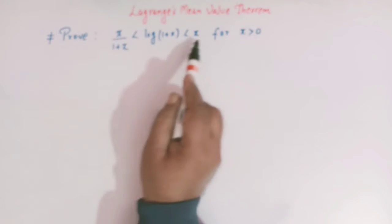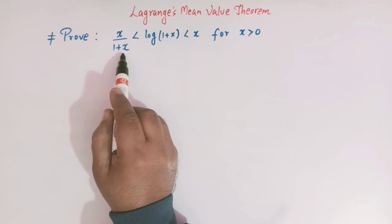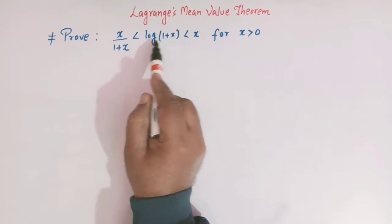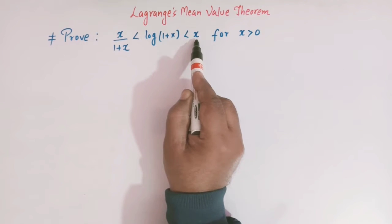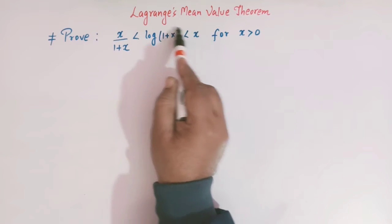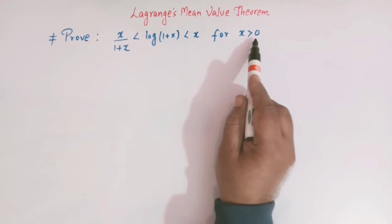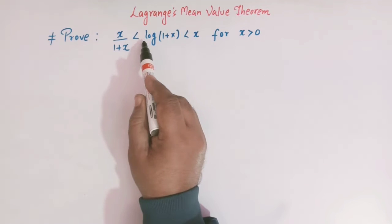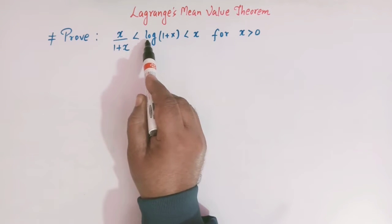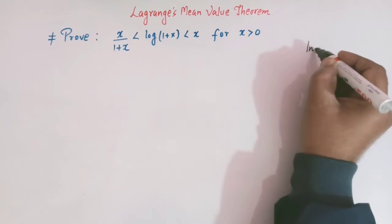So here we have to prove that x over 1 plus x is less than log of 1 plus x, and that is less than x. This inequality is true for all x greater than 0. Moreover, here we are taking the notation LOG to mean the natural log ln.